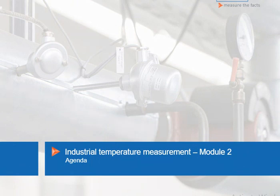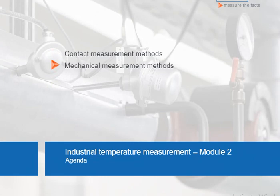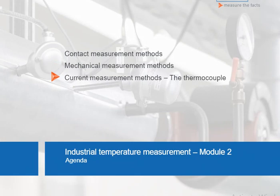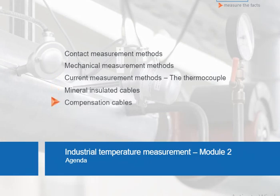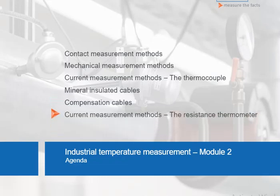At the end of this module, we will have learned which contact measurement methods are used today to measure temperature correctly. In the first section, we'll take a look at traditional mechanical measuring techniques, and then move on to the current measurement method using thermocouples. The next point will be the production and use of mineral insulated cables, compensation cables, followed by a detailed description of the resistance thermometer. A brief summary will then close this module.